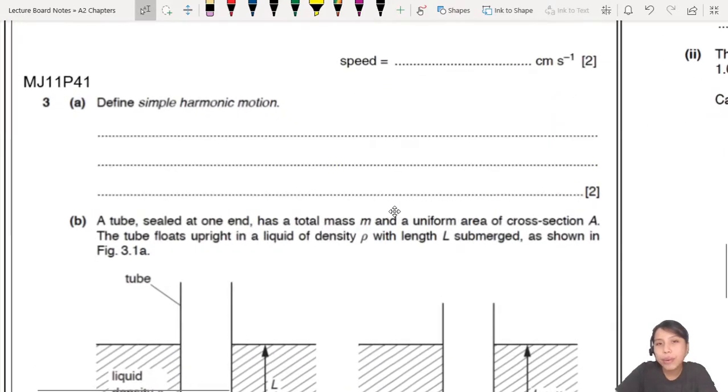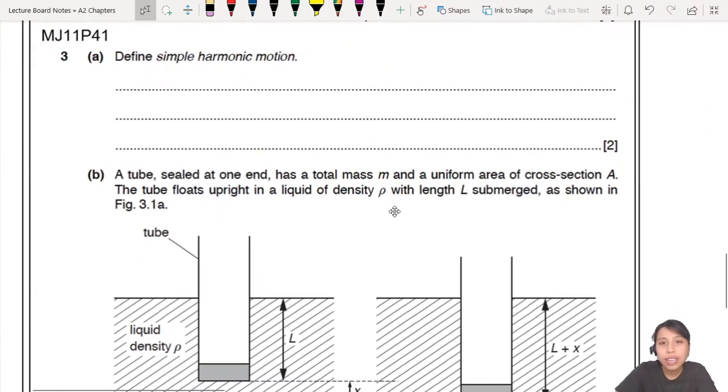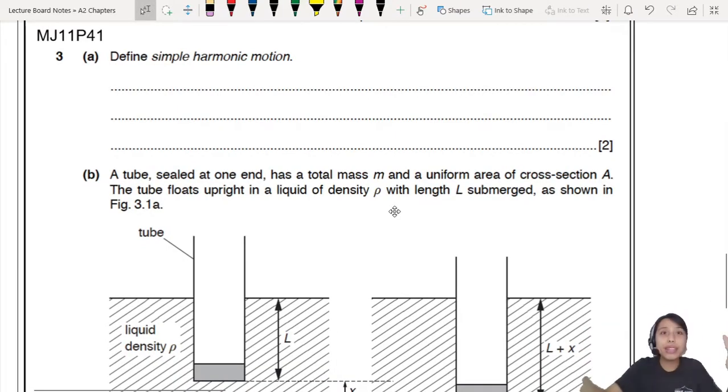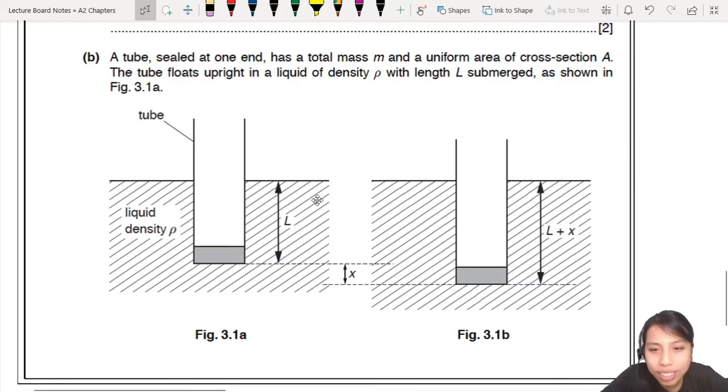One of the ways they will ask you about simple harmonic motion is they throw you a scenario, any random scenario, and they will ask you to try to decide whether it's simple harmonic motion or not. You have a very interesting scenario.